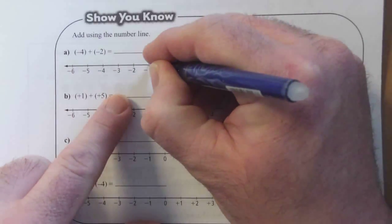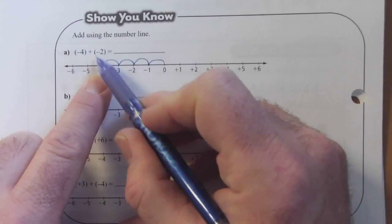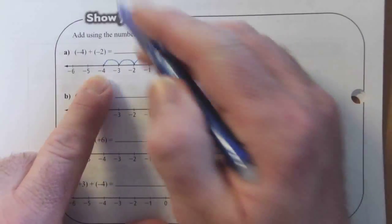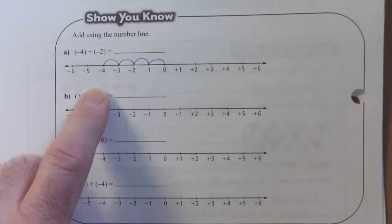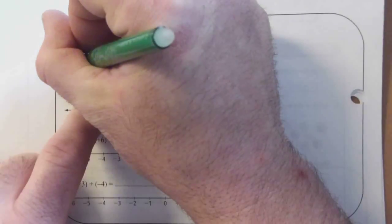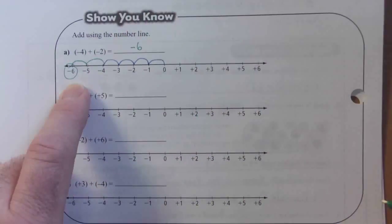Four jumps. One, two, three, four. Now, next number is also negative, so I'm going to continue moving left. Two more leaps. I'll change colors for this one. One, two. Our answer is negative six.